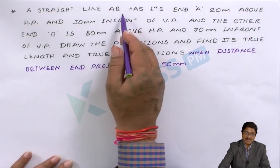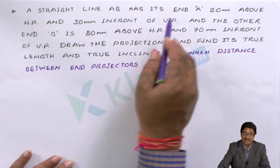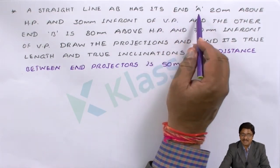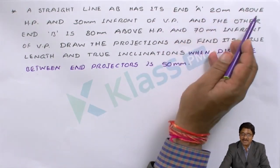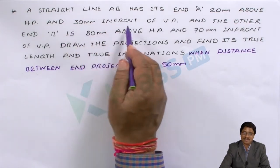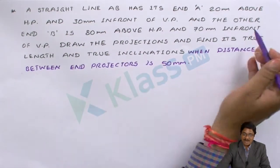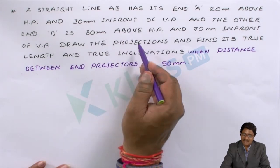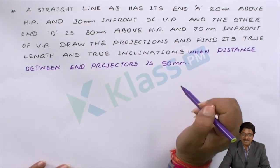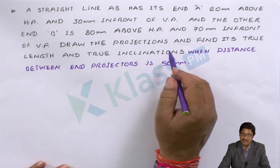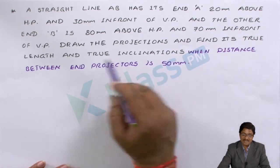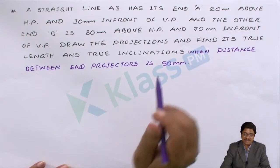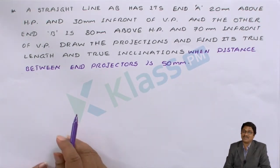What has been given? Here the line AB — the length is not known, but the endpoint conditions are known. All the end point conditions are given: A is 20 mm above the HP and 30 mm in front of the VP. And the other end B is 80 mm above the HP and 70 mm in front of the VP. Draw the projections and find its true length and true inclination when the distance between the projectors is 50 mm.